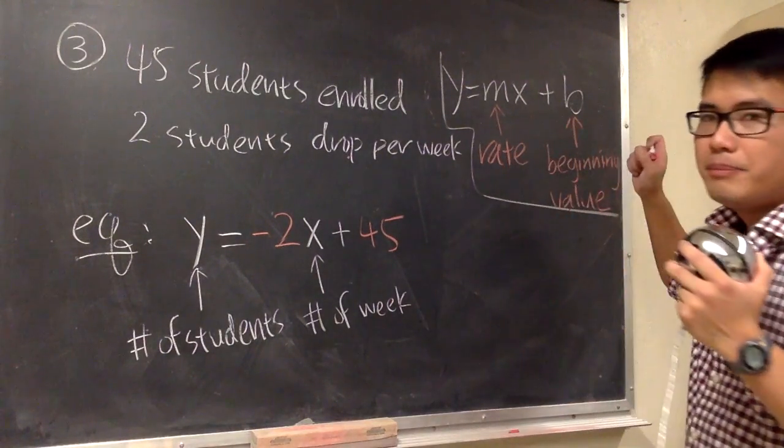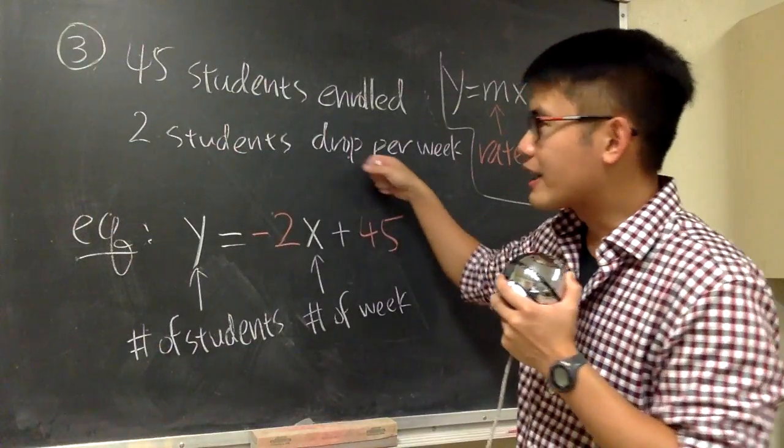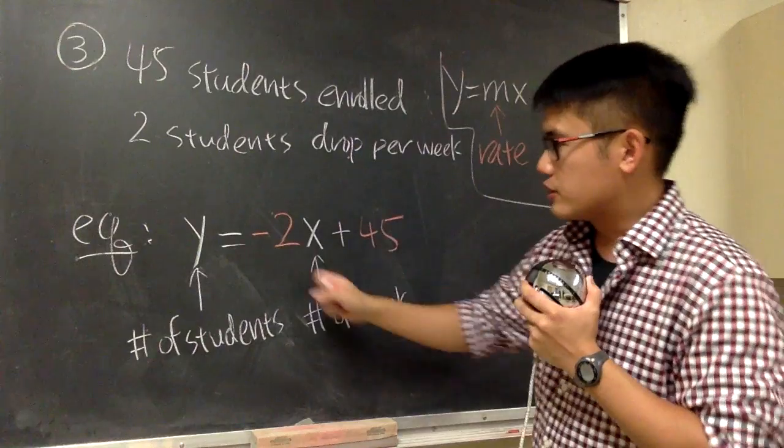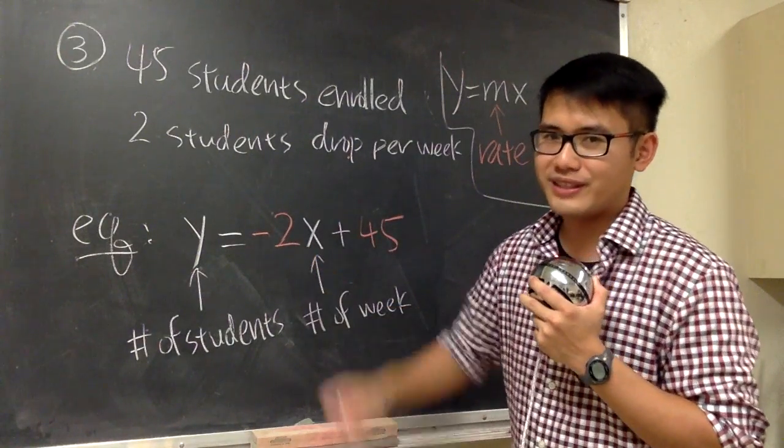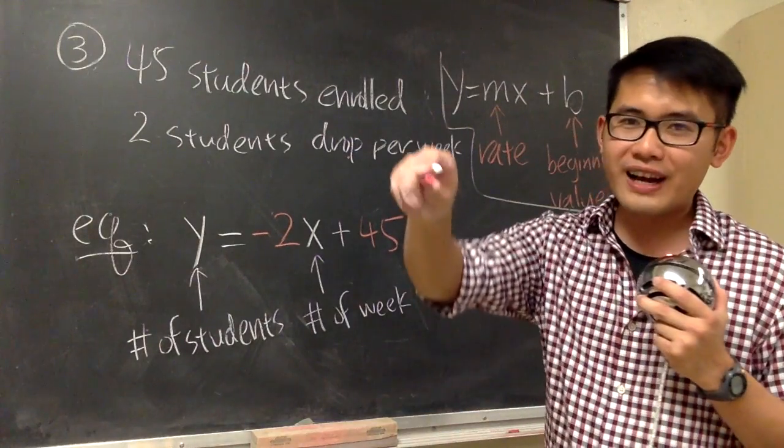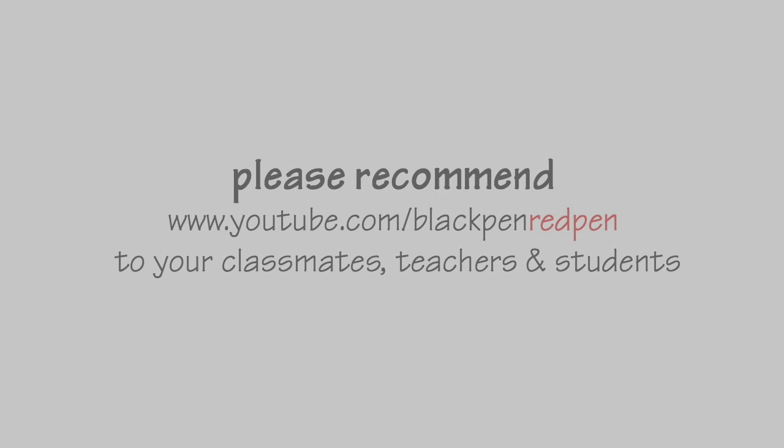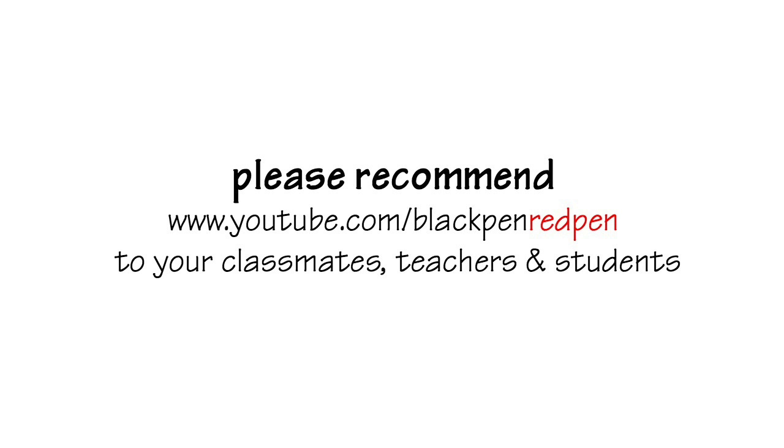Rate and the beginning value. And the point right here is that you have to pay attention to what kind of rate that we have right here. It's dropping, so we should have a negative rate. Okay? So, hopefully, this video helps. And I even sacrifice my red chalk right here to make this video. That's it.